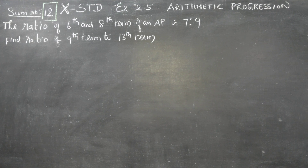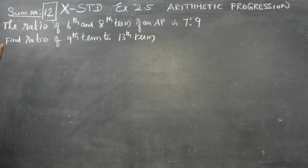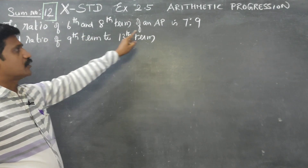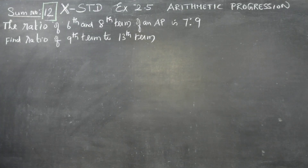Dear 10th standard students, in exercise number 2.5, sum number 12: the ratio of the 6th and 8th terms of an AP is 7 is to 9.